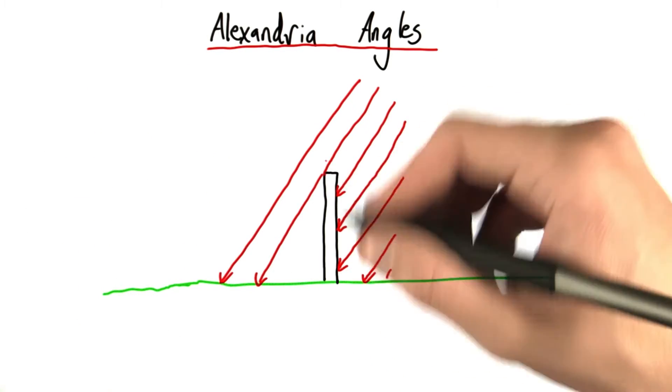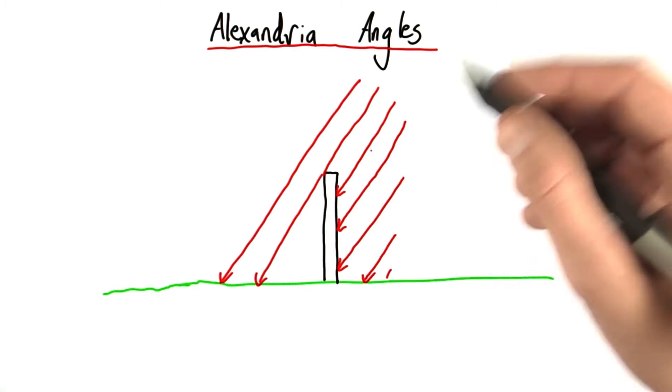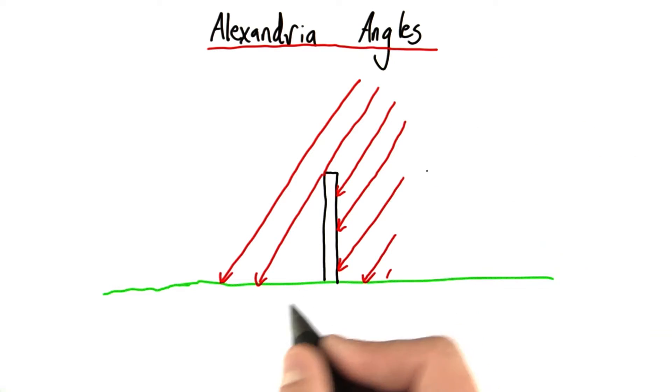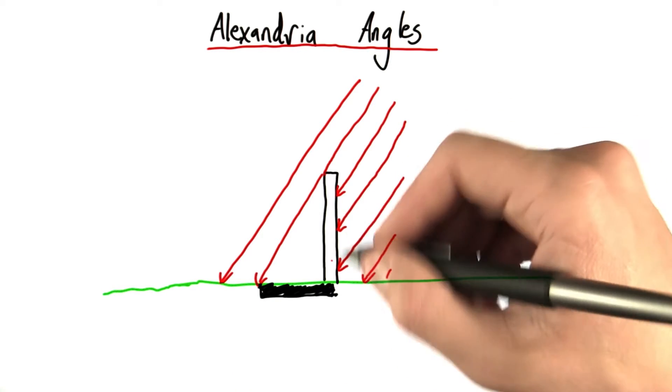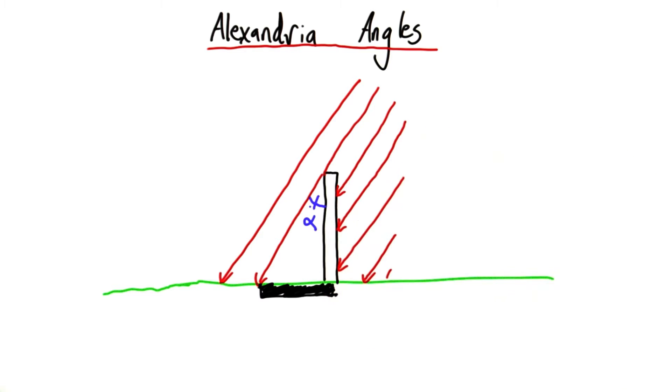We put a vertical rod upright in Alexandria and allowed the sun to shine on it, which caused a shadow down here. By measuring the length of the shadow and the length of this rod, we could calculate this angle, which we called alpha.